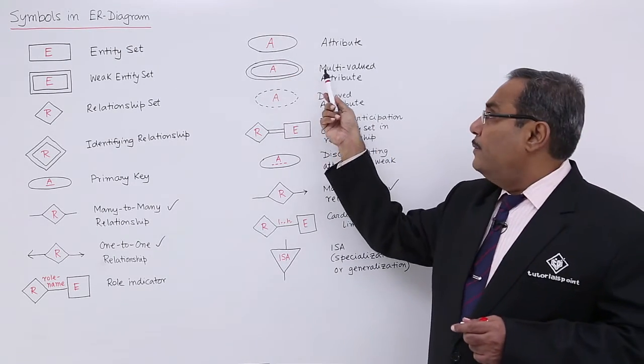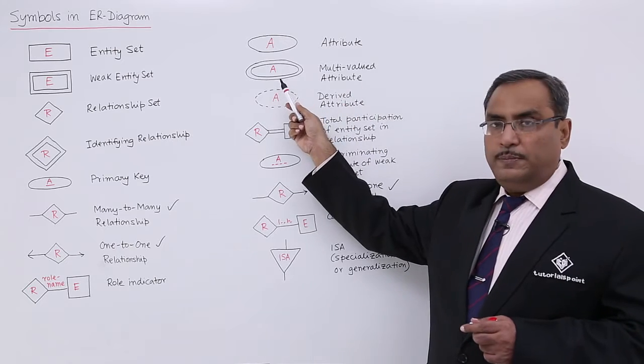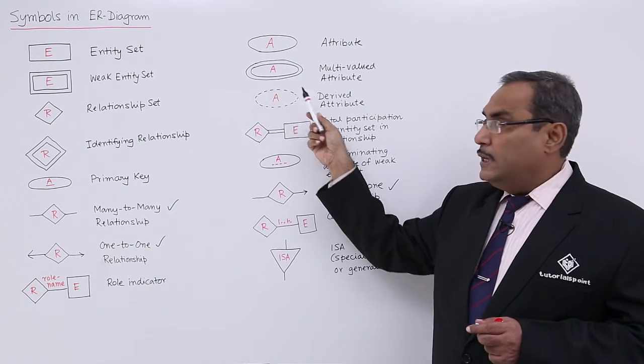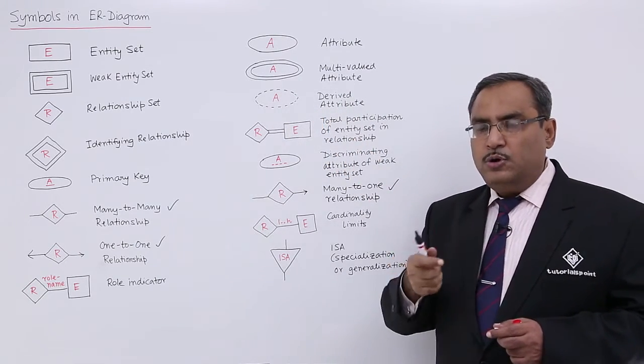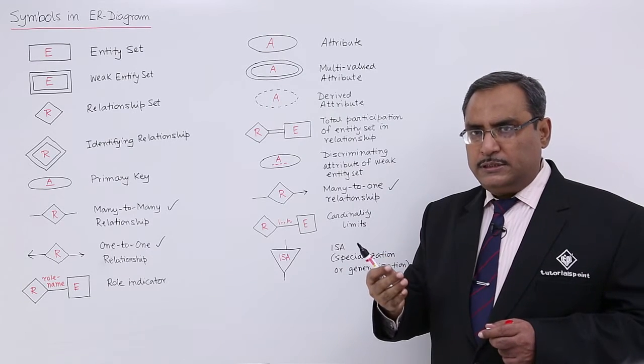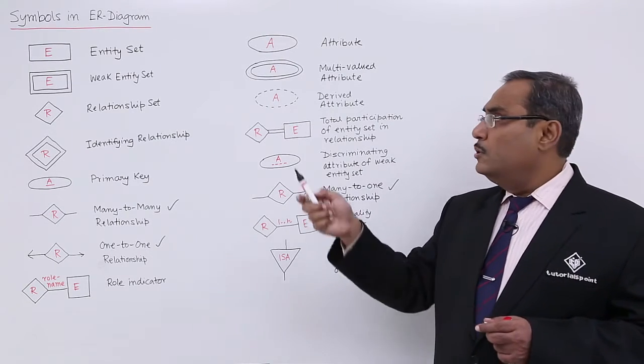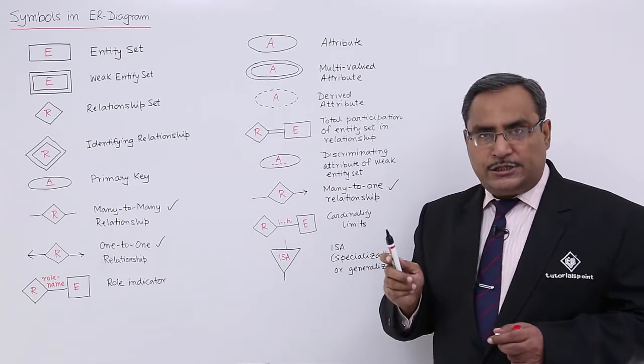Attribute will be denoted in this way. Multivalued attribute will be denoted by double ellipse. Derived attribute, whose value will be calculated by some calculations or business rule, will be enclosed within dashed ellipse.